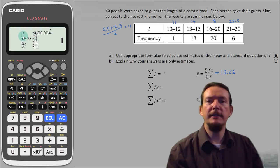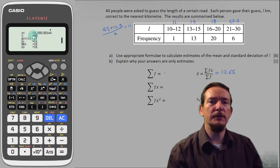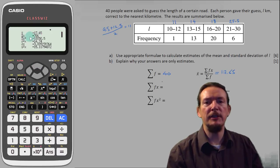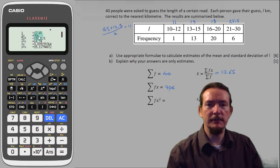Now on the ClassWiz this is given by n, the number of elements. So sigma f is equal to 40. Now sigma fx is given by the one below, sigma x equal to 706. I'll also need sigma fx squared which is the next one down, 13,050.5.